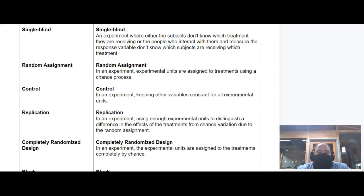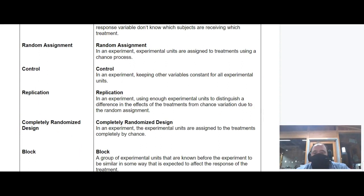These are things you want in an experiment. You want to have random assignment, so you want to take your group of subjects and randomly assign some of them to get each of the different levels of the factor.